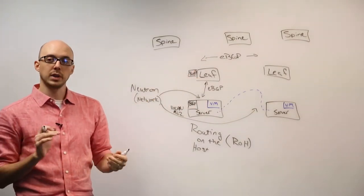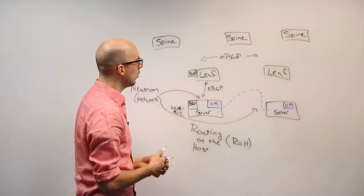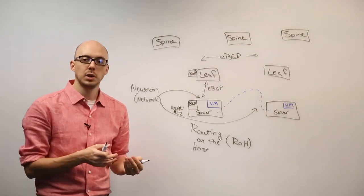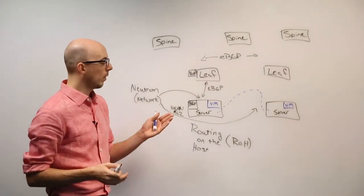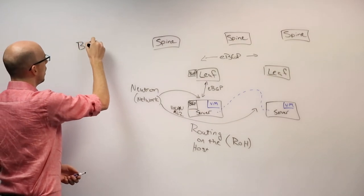This builds a truly web-scale environment and network. The other key component here, when talking about Cumulus Networks' eBGP and routing on the host, is something called BGP Unnumbered.